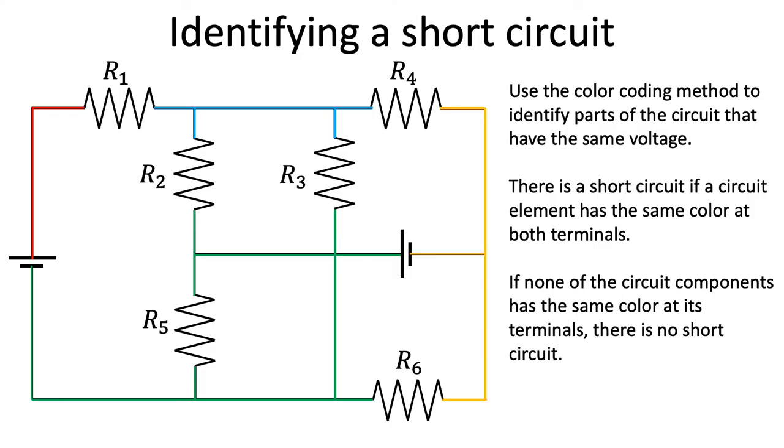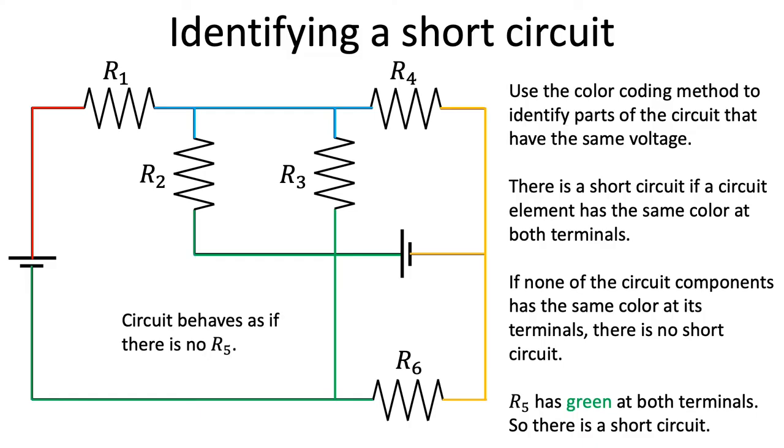In this particular case, R5 has green at both terminals, so there is a short circuit, and the circuit behaves as if R5 is not there, as shown in this diagram.